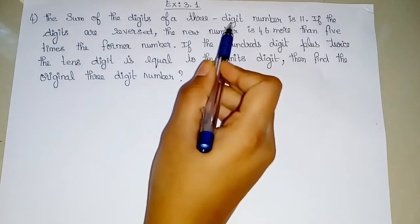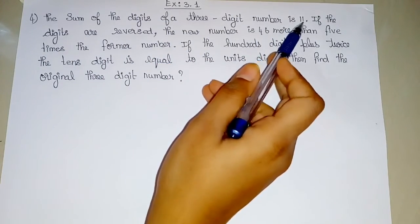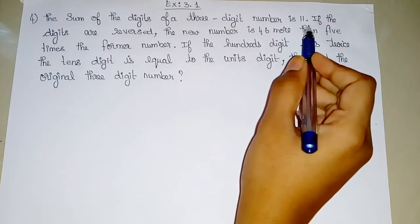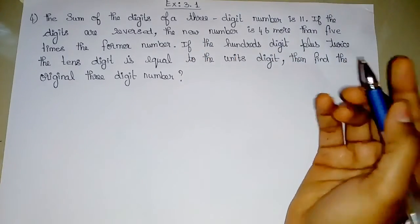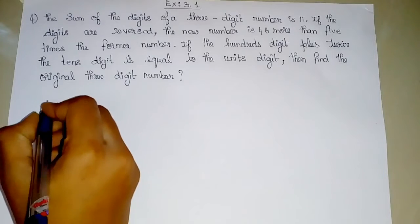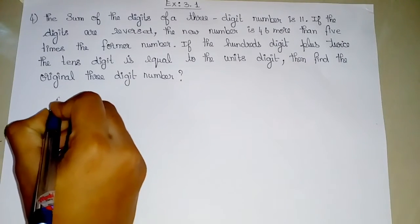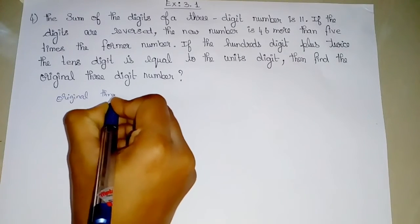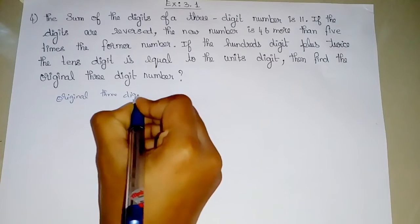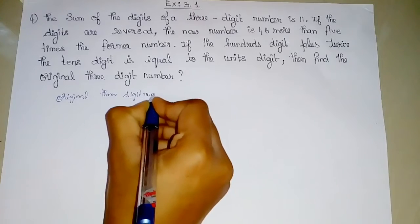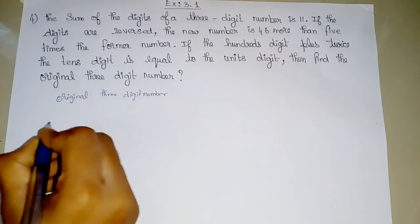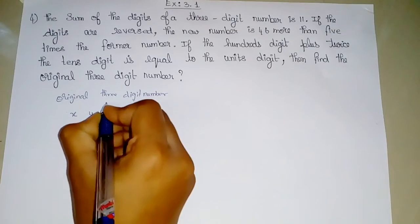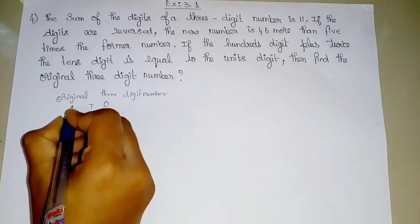The sum of the digits of a 3-digit number is 11. We don't know the 3-digit number, so let's assume the original 3-digit number has digits X, Y, Z for the units, tens, and hundreds places respectively.